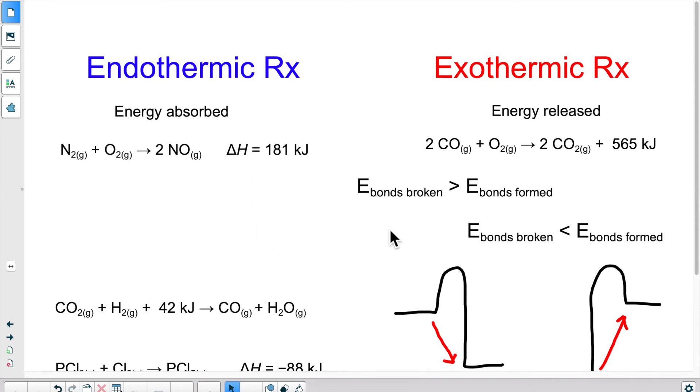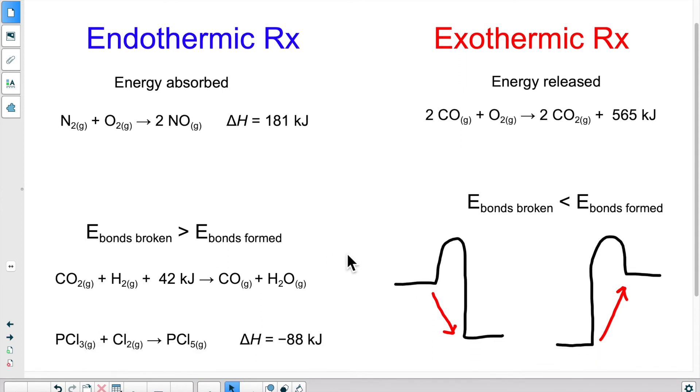Let's continue here. I have an equation with the energy on the reactant side. If the energy is on the reactant side, did we say this was endo or exo? We said the energy is entering the reaction, being absorbed by the reactants. Overall, the energy is positive. So, this would be an endothermic reaction.